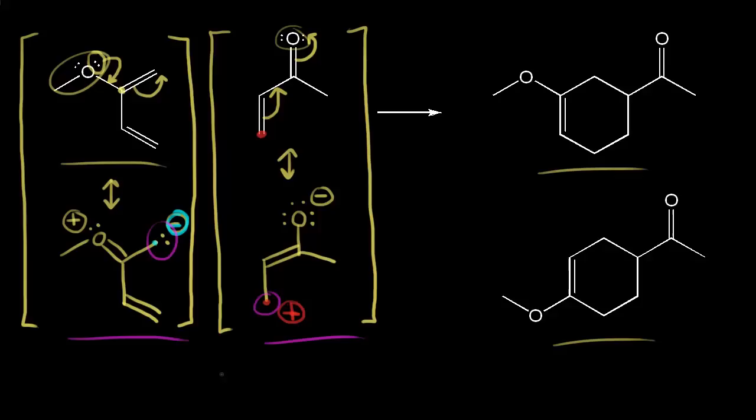Technically, the Diels-Alder reaction is not an ionic reaction. It's a pericyclic reaction. But this trick does allow you to predict the product. So let's go ahead and use it.